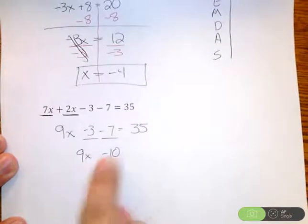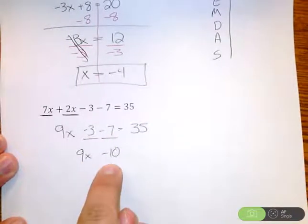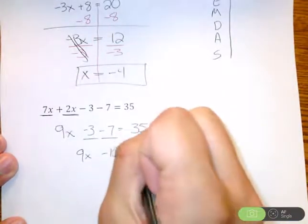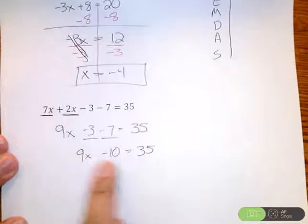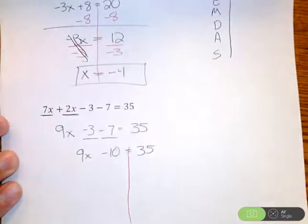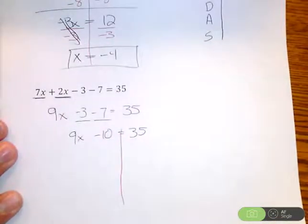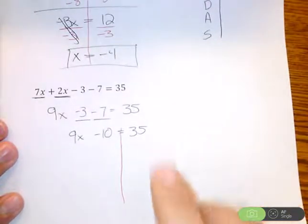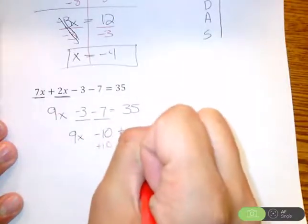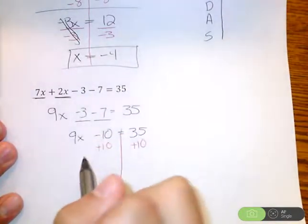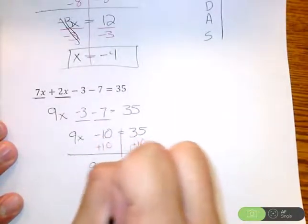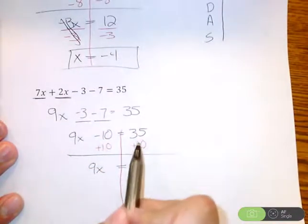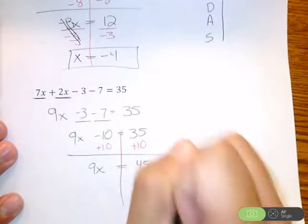Still didn't touch that 9x, so I brought down the 9x. Negative 3 and negative 7 give me that negative 10. Still need that equal, still need that 35. Now that I've condensed it down, this is looking a lot better, a lot closer to things I have solved. So I'm going to draw that line in, start solving, doing that order of operations backwards. The opposite of subtracting 10 is adding 10 to both sides. Negative 10 plus 10 is 0. So on the left side, I have a 9x. On the right side, 35 plus 10 is 45.